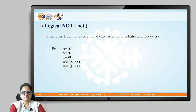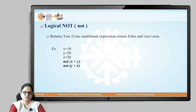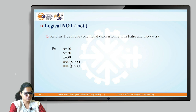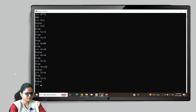NOT of true is false, so NOT y less than z returns false. It just negates the values — if it results in true, it converts to false; if it results in false, it converts to true. These are the logical operators. We will see the examples.